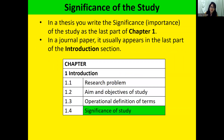In chapter one, the significance of the study is in the last part. In a journal paper, it is usually the last part of the introduction section. I'm telling you where it is so that when you read papers, you know where to look for the significance of their study. From there, you learn how to write it like them, or you can borrow their statements and just cite them.